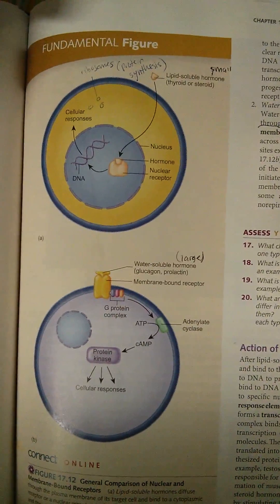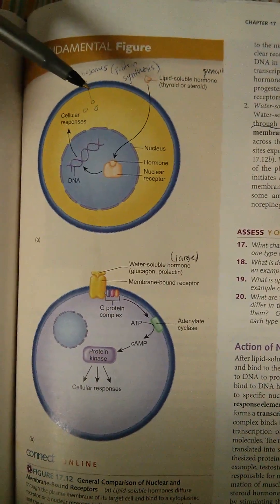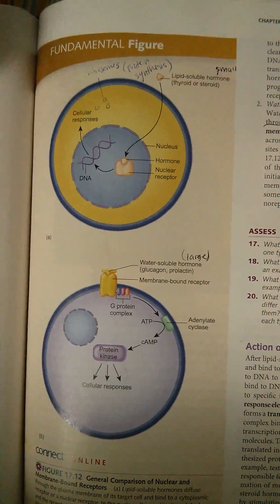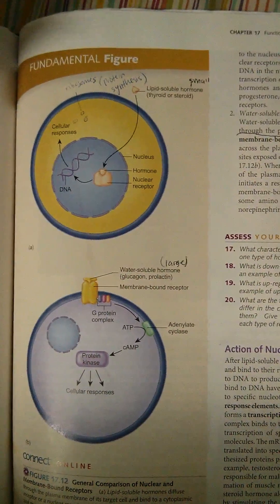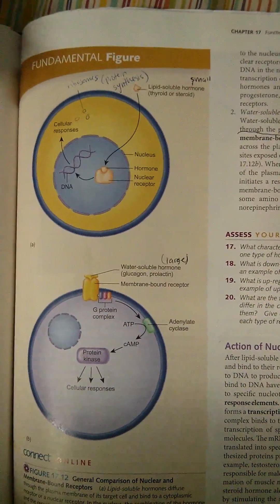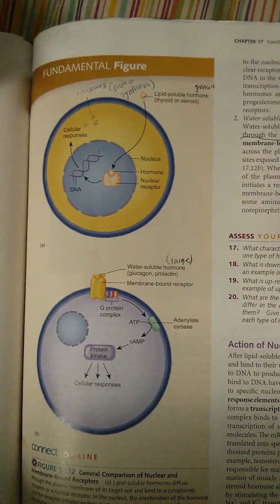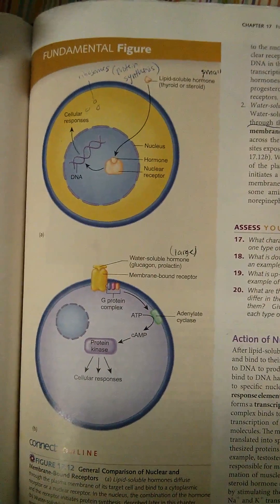So some examples of lipid-soluble hormones are estrogen, testosterone, progesterone, aldosterone, and cortisol, which basically are all having to do with the reproductive system and stuff like that.